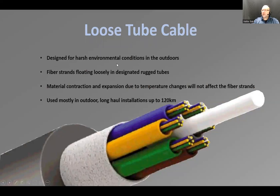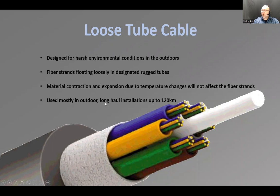Loose tube cable is designed for harsh environmental outdoor conditions. Fiber strands float loosely in designated rugged tubes. Material contraction and expansion due to temperature changes will not affect the fiber strands. It's used mostly in outdoor long-haul installations — up to 120 kilometers. For those distances, the fiber strands used are going to be single mode.